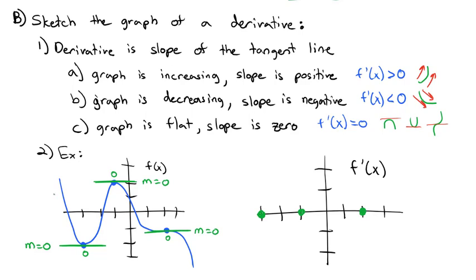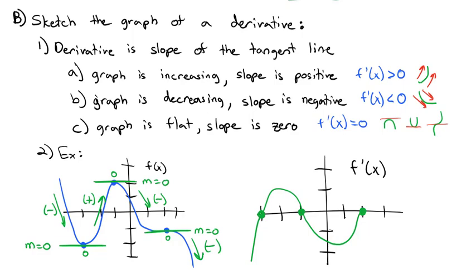The graph starts going downhill, so the derivative must start negative until the first zero. After that, the graph goes uphill — increasing — so the derivative is positive until the next zero. Then we're decreasing again to the next zero, so we need to be negative. After that zero, the graph is still decreasing, so the derivative stays negative. The graph of f prime starts negative, turns positive, turns negative, and stays negative.